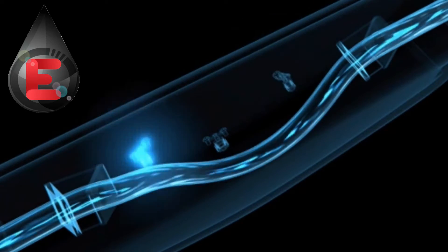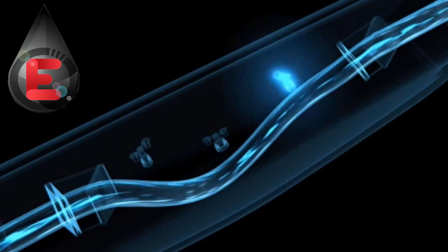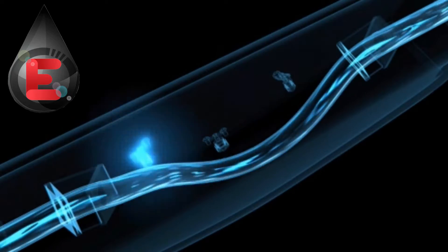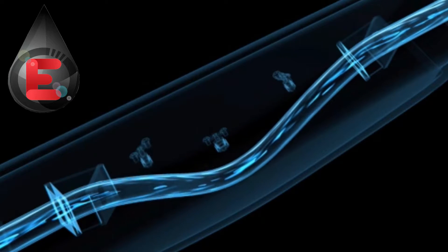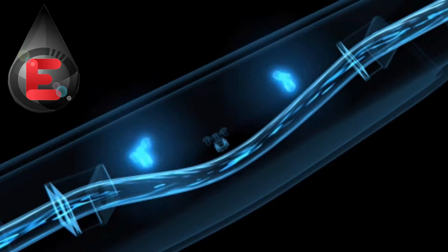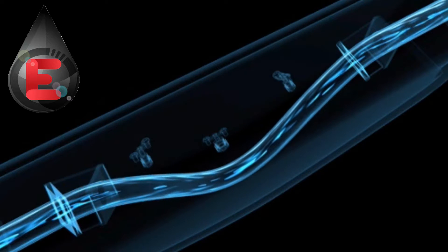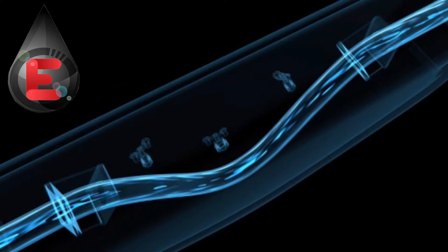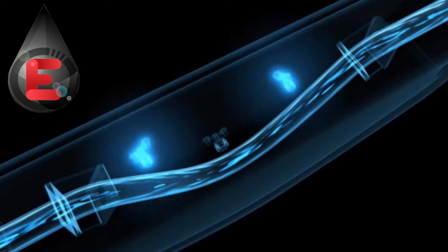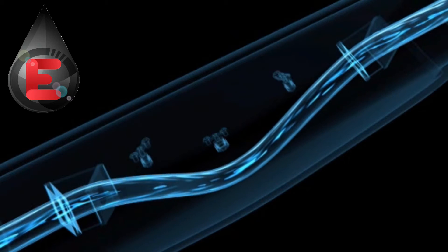The application of the Coriolis measuring principle doesn't stop here. It can also be used to simultaneously determine the density of the flowing fluid. To do so, the sensors also register the oscillating frequency, in other words, how often the measuring tube moves back and forth in one second.